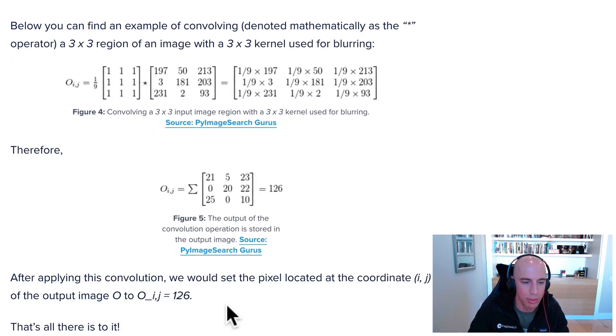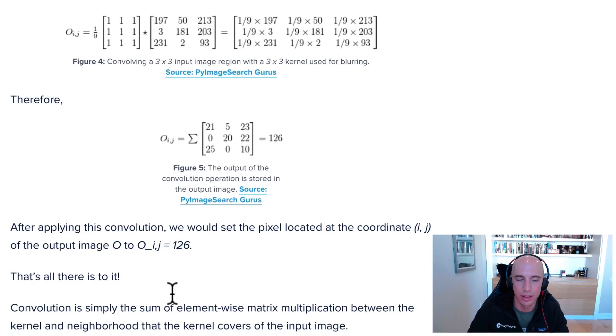That means for the output array at the pixel located at i, j, that value will be stored as 126. And you do that for every single pixel inside the image.